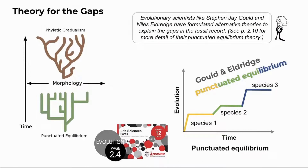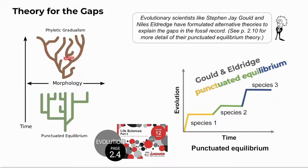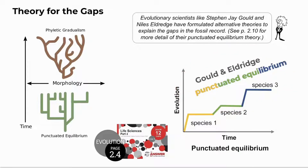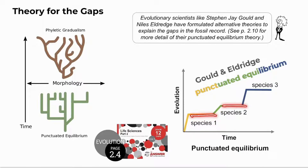Transitional fossils are rare. Darwin's idea of gradualism — where one species slowly changes into another over long periods of time — would predict transitional fossils before each new species appears. But the lack of transitional fossils led Gould and Eldredge to propose punctuated equilibrium, which proposes sudden appearances of new species followed by long periods of no change — equilibrium or stasis.